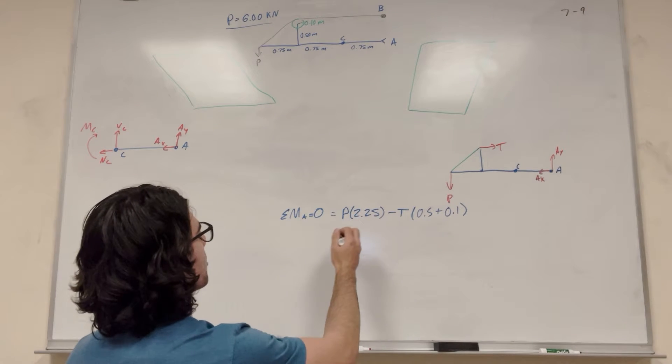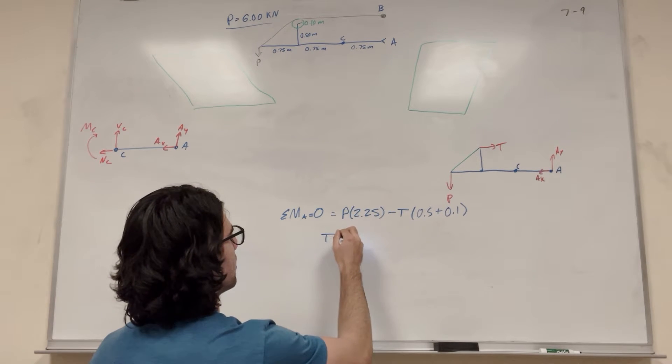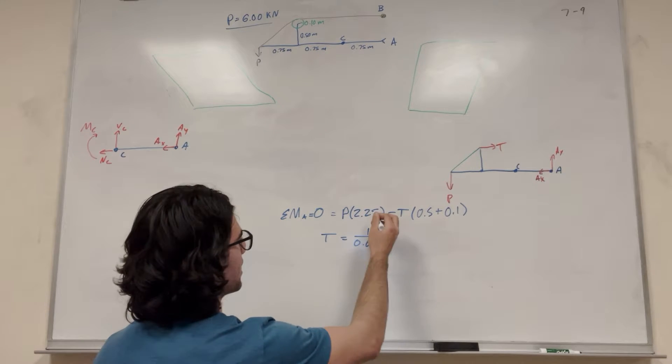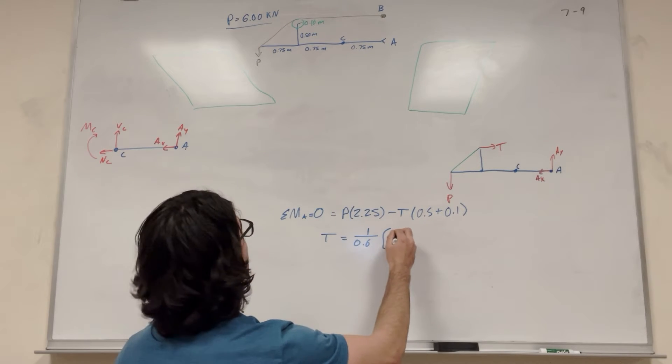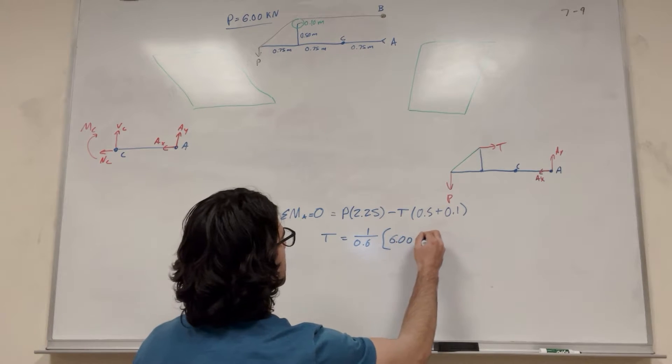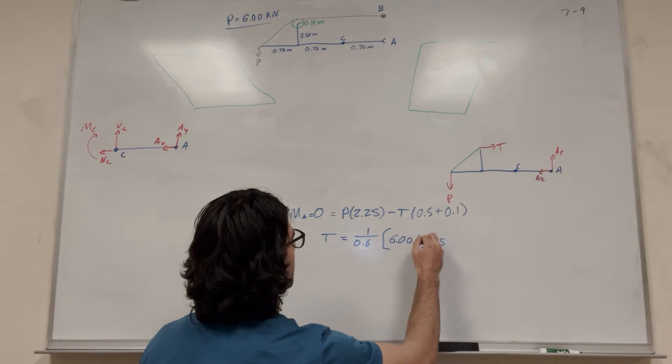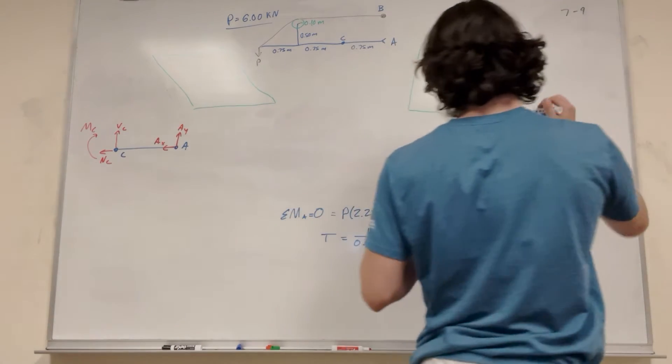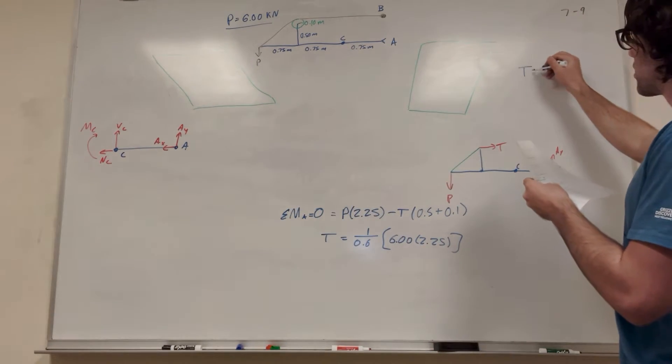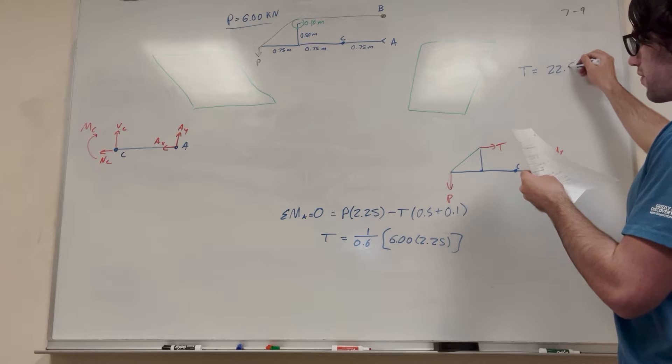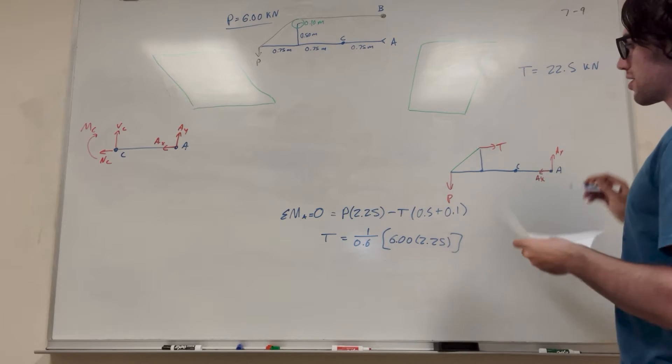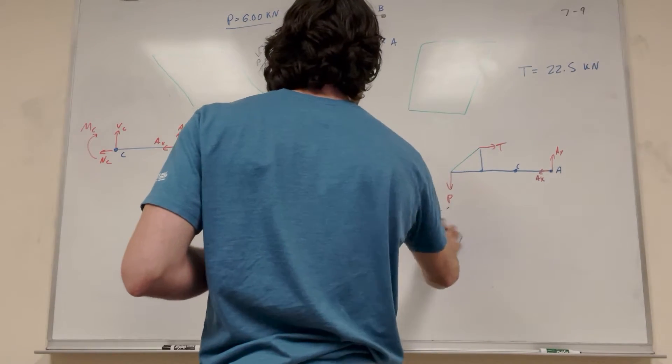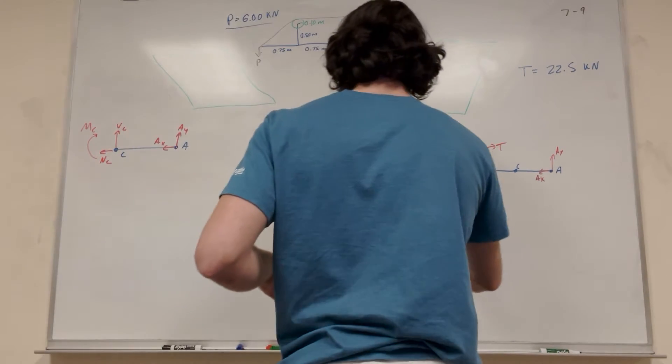So then if you plug in your P and move T over, so T is equal to 1 over 0.6. We're dividing by that 0.6. P, 6 kilonewtons times 2.25, like that. And I'm going to write it up here. So tension is then 22.5 kilonewtons. That's a big tension. So that's good. So now we have tension. That's going to be very useful.